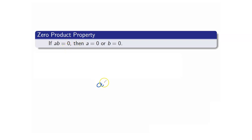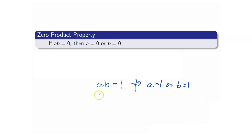For example, if AB is equal to one, you cannot say that A is equal to one or B is equal to one, because you can have three-halves and two-thirds. The product equals one, but neither of those numbers equals one. So remember, that constant has to be zero.